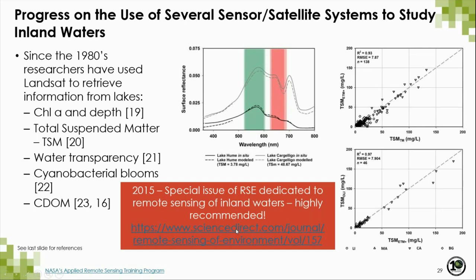Since the 1980s, researchers have used Landsat to retrieve information from lakes, particularly information related to chlorophyll a, depth, total suspended matter, water transparency in the form of vertical attenuation coefficients, cyanobacterial blooms, and CDOM. The graphs on the right show the similarities of Landsat Enhanced Thematic Mapper and OLI sensors in retrieving total suspended matter in lakes. The figure on the left shows the increase in surface reflectance signal when comparing a lake with clear waters to one with a high concentration of total suspended matter. I highly recommend looking for the special issue of Remote Sensing of Environment for 2015, dedicated to remote sensing of inland waters.